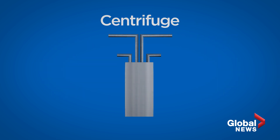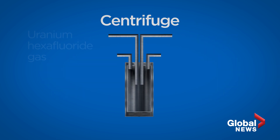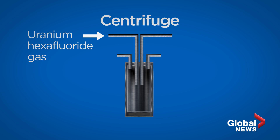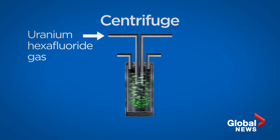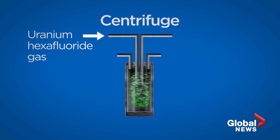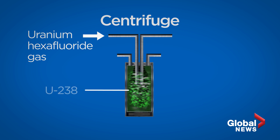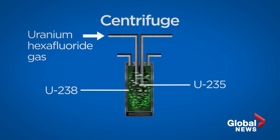This is done in a machine called a centrifuge. Uranium hexafluoride gas is fed into the rotating cylinder and spun at a high speed — this is what splits the molecules. The heavier U-238 molecules collect on the outside of the cylinder, and the lighter U-235 molecules settle closer to the middle.